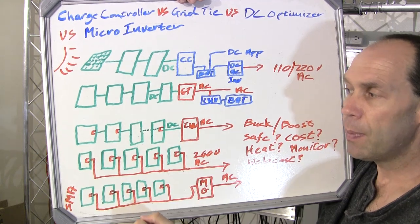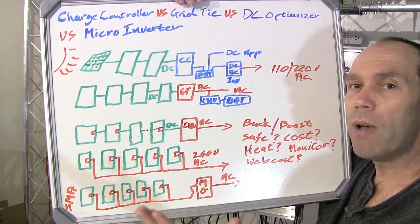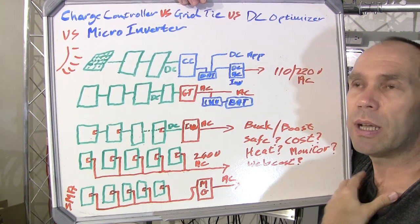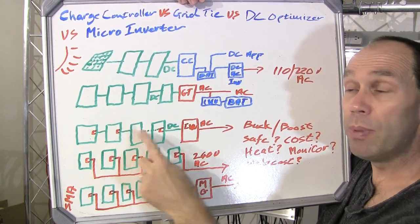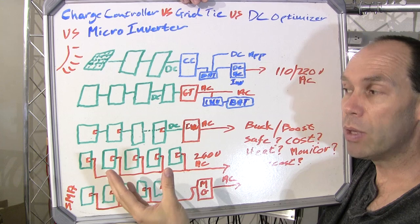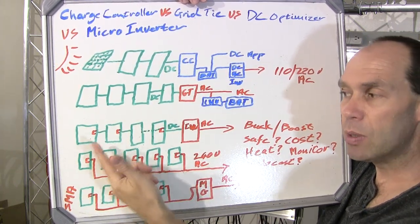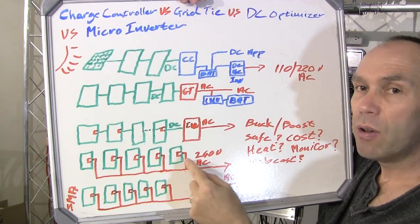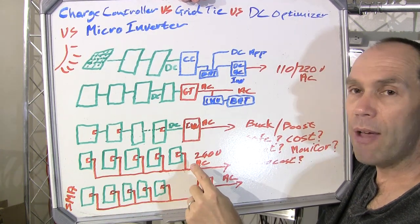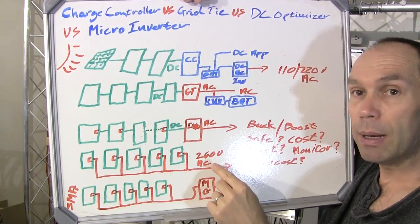One of the things to also look for is the string lengths allowed in these systems. In some DC-optimized systems you need a minimum of eight panels in a string — for me that would be a problem if I'm starting out with four solar panels. Most of these systems also have a maximum depending on the type of system you're running. With most micro inverter systems there's no minimum — you can have just one panel — but they do have maximums because there's a maximum amount of current which can be carried along the mains cabling.